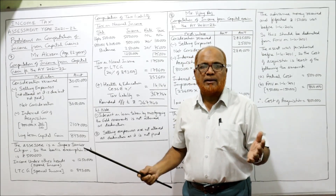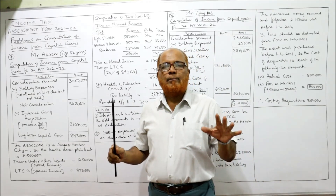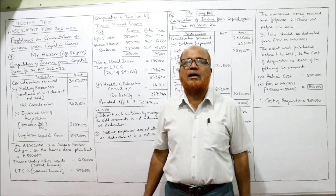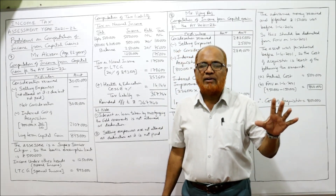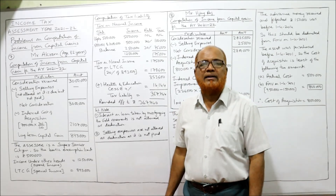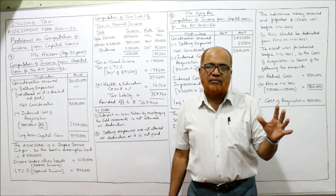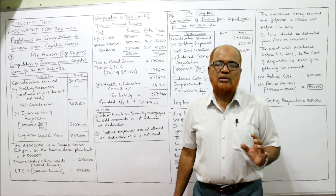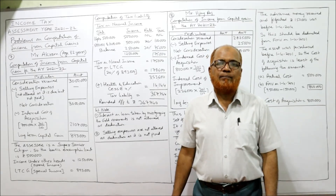There are two types of capital gain: short-term capital gain and long-term capital gain. All the problems are based on the theory which I have given in five videos. Without watching those five theory videos, if you directly come to the problems you'll find it difficult. My suggestion is to watch the theory videos completely, then come to the problems.